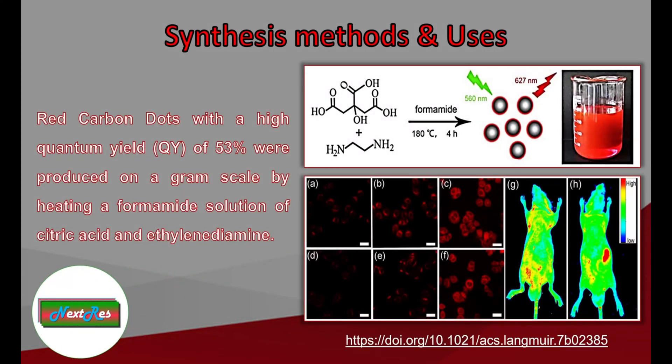This is another example of red carbon quantum dots synthesized from citric acid as the main carbon precursor, combined with ethylene diamine in a formamide solvent. This report has claimed to obtain a quantum yield of 53%. When considering carbon-based systems, 53% quantum yield is a very high percentage for red-emitting carbon dots, and the obtained carbon dots were also produced on a gram scale. It is a very interesting work — you can go through it to see how gram-scale synthesis has also been achieved.